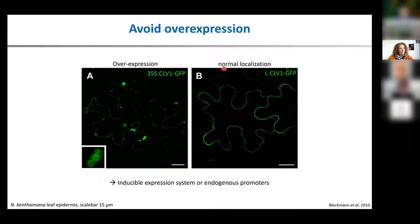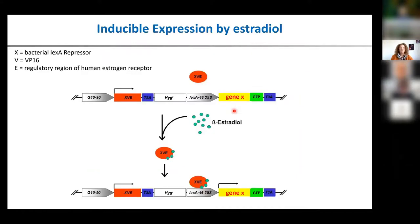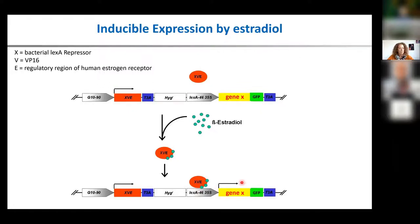We mostly use an inducible promoter in our transient system — an XVE system with the regulatory region of the human estrogen receptor. Plants don't have this, so we can use it cleanly. The XVE is produced, and only if we apply estradiol does this lead to binding to the minimal promoter so that our gene of interest, labeled with GFP, is expressed. Then after a specific time, we can estimate whether the expression is at a normal level or if it's overexpressed, and time the experiments very well.